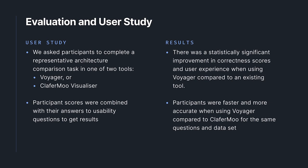Let's get back to the slides. We conducted a user study where we asked participants to solve a set of questions probing the architectural design space for a set of configurations. Our user study showed that Voyager is effective for use with multi-dimensional architecture trade-off problems. We gave participants two tools: a spreadsheet to gather a baseline, and either Voyager or Clafermoo Visualizer, a comparable existing tool. Participants rated the tools using usability questions on a five-point Likert scale, combined with correctness scores, to give an overall result. Our results show Voyager had a significantly better user experience and allowed participants to achieve higher accuracy in a shorter time span.